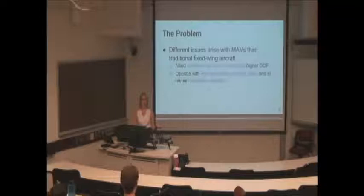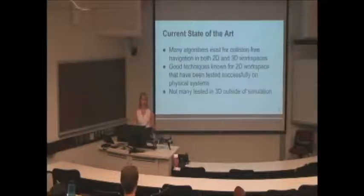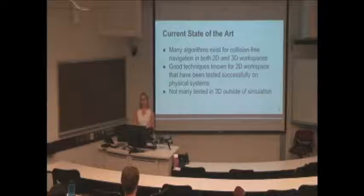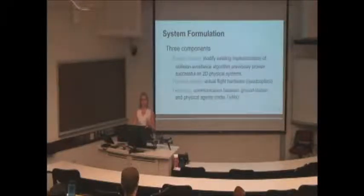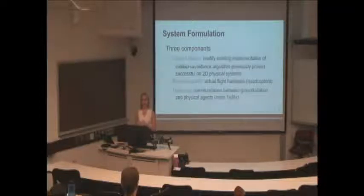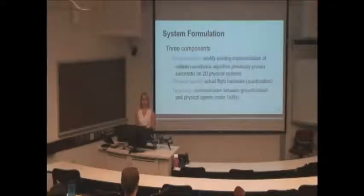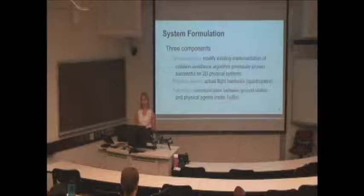Normal aircrafts don't have this problem of avoiding humans as obstacles in general. Currently there are a lot of algorithms that exist for motion planning in 2D and 3D workspaces, but while many have been tested and are pretty robust for physical systems in 2D workspaces, not many have been tested outside of simulation for three-dimensional workspaces. To solve this problem, we formulate a system of three components: a ground station, the physical agent, and the telemetry that connects the two. We're modifying an existing implementation of a collision avoidance algorithm that has been applied to physical systems successfully in 2D and extending it to 3D.